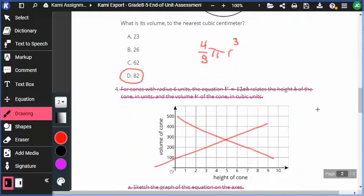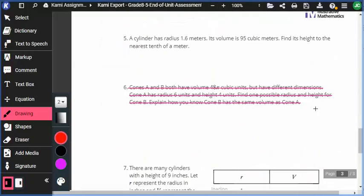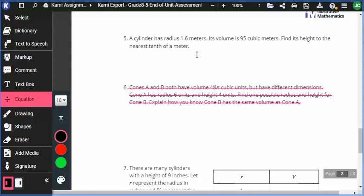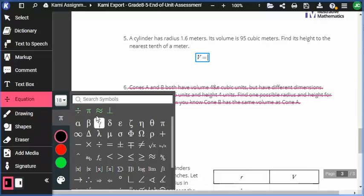All right. We go on. We're going to go past number four because we skipped that one. We're going to go to number five. Number five says a cylinder has a radius that's 1.6 meters. Its volume is 95 cubic meters. What is its height? So for this one, we have to do a little bit of equation work.